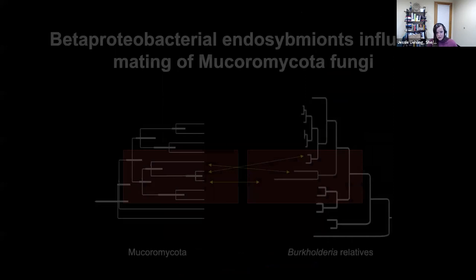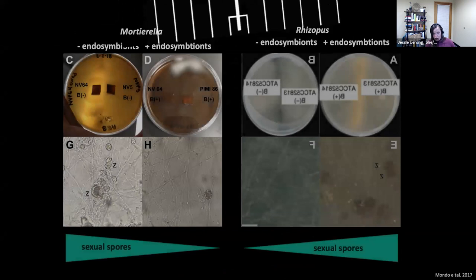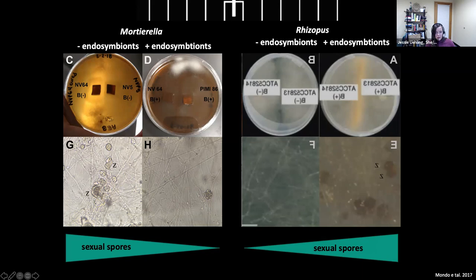This pattern is present in the larger group — the Mucoromycota and the beta proteobacteria. Our colleague Stephen Mondo published a very interesting paper where he showed in Rhizopus, another Mucoromycota fungus, the exact same pattern — but it's opposite. When you clear these fungi of their endosymbionts, you actually abolish mating. So in some groups, you get rid of the microbiome and they mate more; in some groups, you get rid of the microbiome and they just stop mating. This is one of our active research questions: how and why do endosymbionts control fungal mating?